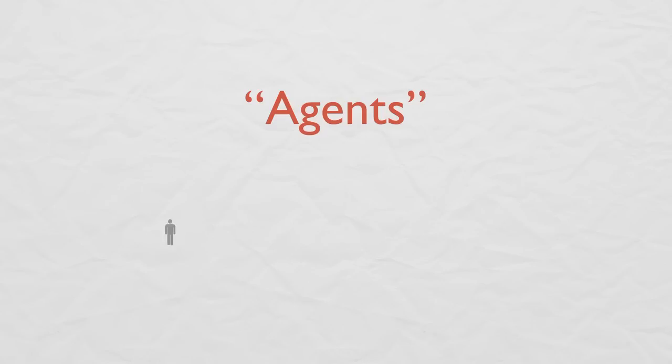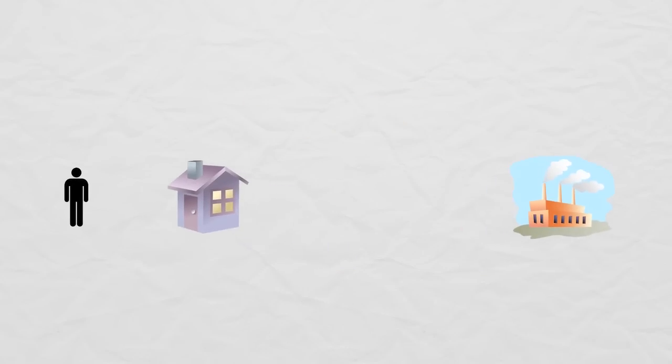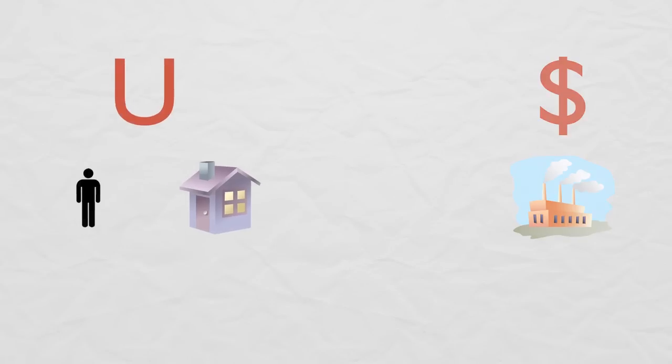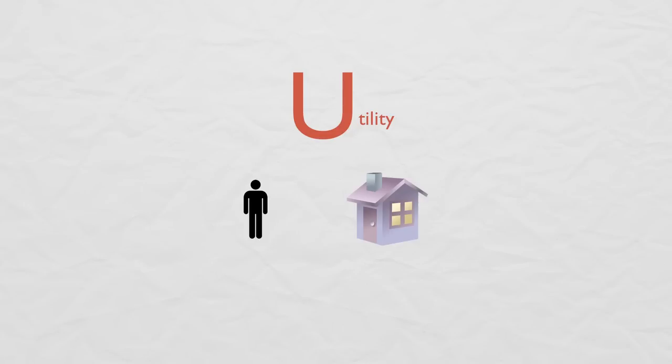Typically, agents represent individuals, households, or firms. Firms are seen as profit-maximizing, while individuals and households are seen as utility-maximizing. For now, let's focus on utility.